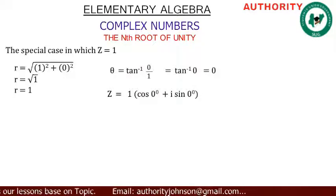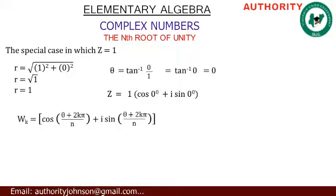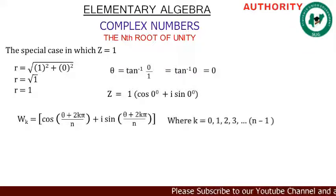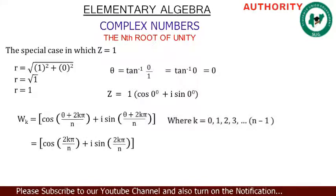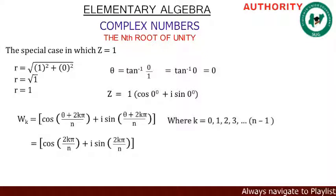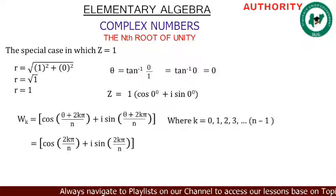For roots of complex numbers, we have wk equal to cos((θ + 2kπ)/n) + i·sin((θ + 2kπ)/n). In this case our theta is zero, so when we substitute zero we get wk = cos(2kπ/n) + i·sin(2kπ/n). Whenever we are asked to find any nth root of unity, we make use of this formula.